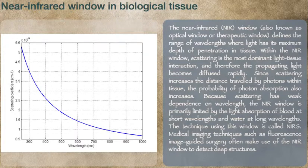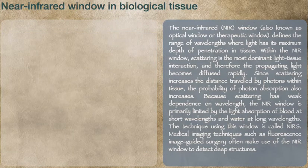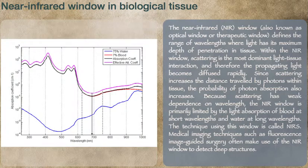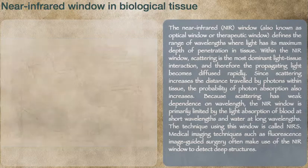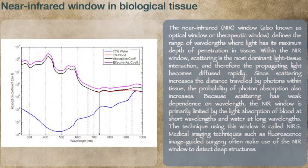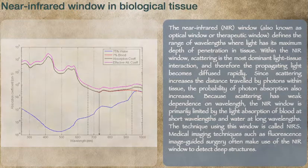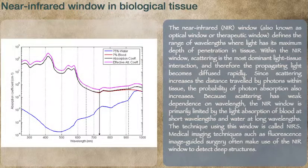Because scattering has weak dependence on wavelength, the near-window is primarily limited by the light absorption of blood at short wavelengths and water at long wavelengths. The technique using this window is called NIS. Medical imaging techniques such as fluorescence image-guided surgery often make use of the near-window to detect deep structures.